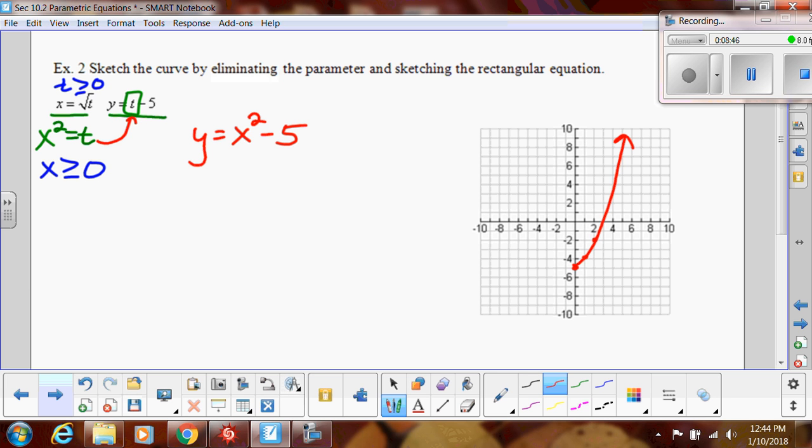And then again, I want to show time. So when t is equal to zero, we know that our coordinate would be at this point right here, zero, negative five. So this is the starting point and it would be running that way. So that's our rectangular equation with our domain restriction.